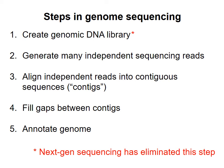In the last three videos I explained in general terms how the first genome of an independent organism was sequenced. A genomic DNA library was created, many sequencing reads were generated, the reads were assembled into contigs, and gaps between the contigs were filled to produce the entire genome.